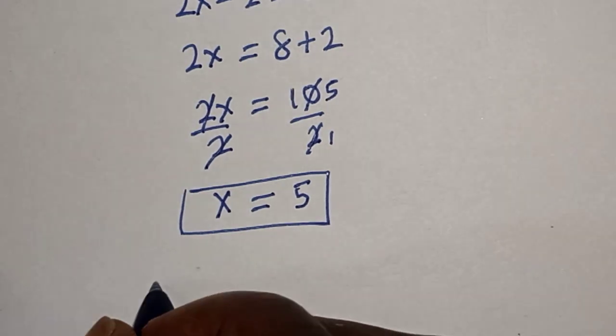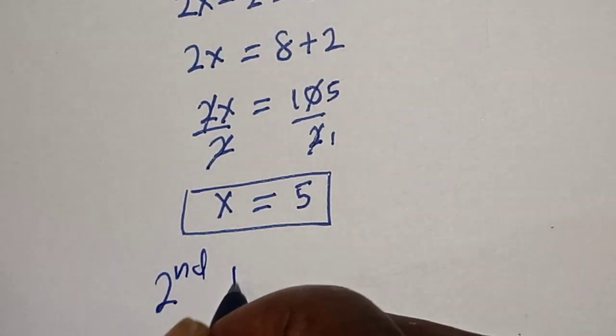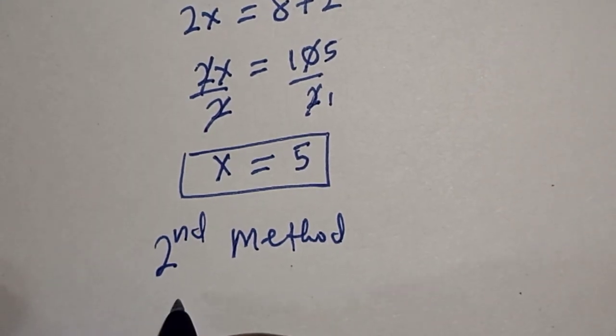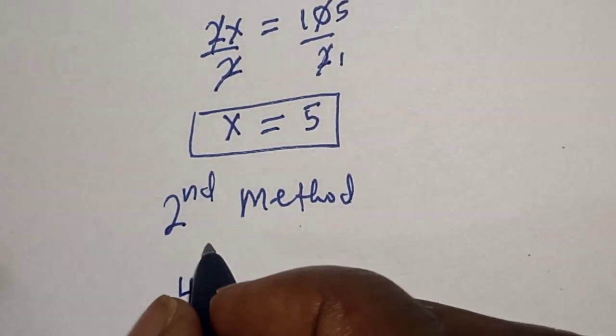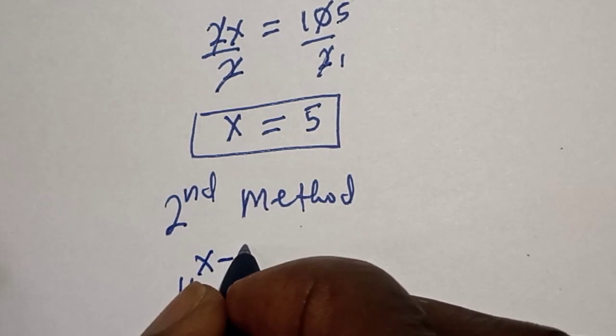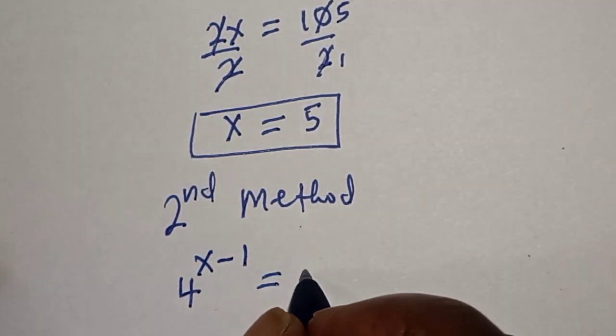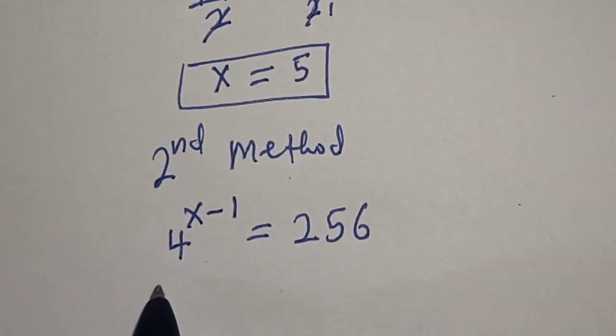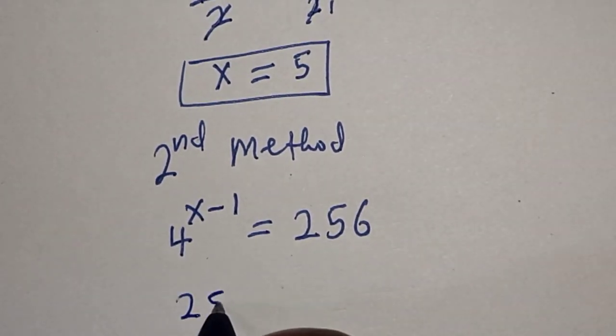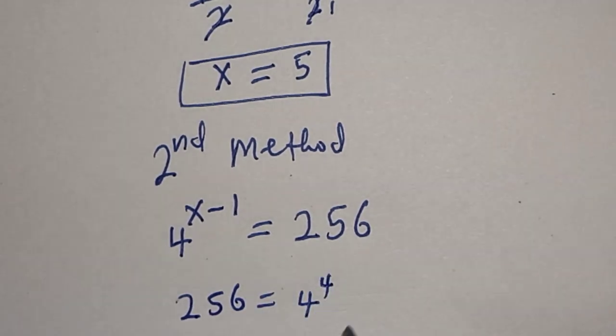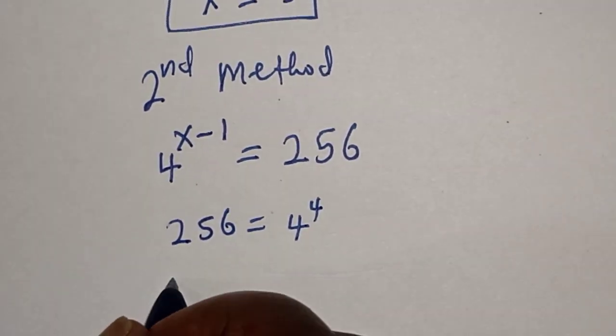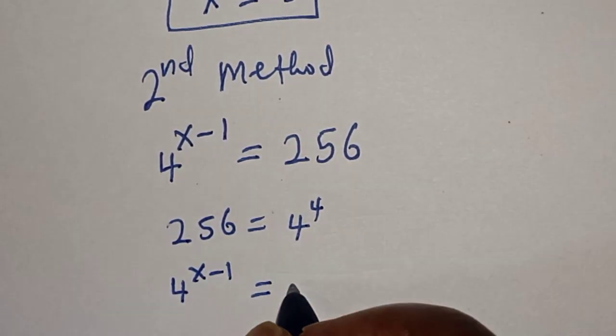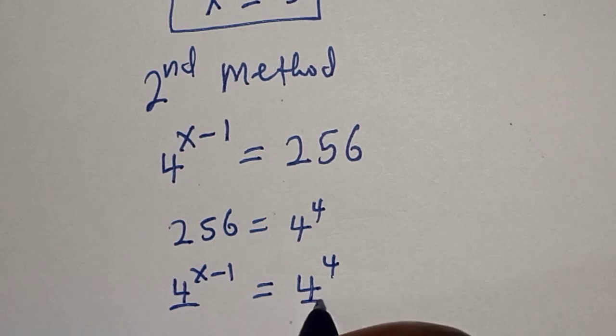Let's consider the second method. 4 raised to power x minus 1 is equal to 256. 256 is equal to 4 raised to power 4. Now we have 4 raised to power x minus 1 is equal to 4 raised to power 4, so they have the same base 4.